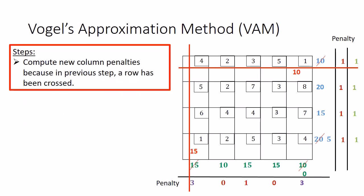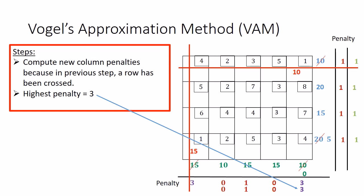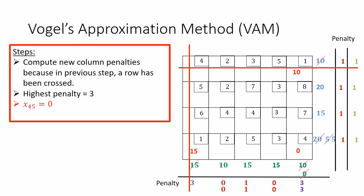Repeat the process again. Since a row was crossed out, compute the new column penalties. The new column penalties turn out to be 0, 1, 0, and 3. The highest penalty is 3 again, so we make an allocation in the fifth column. In the fifth column there are now three cells with costs 8, 7, and 4 — and 4 is the minimum cost cell. The allocation turns out to be 0 units, and after updating supply and demand, the fifth column gets crossed out.